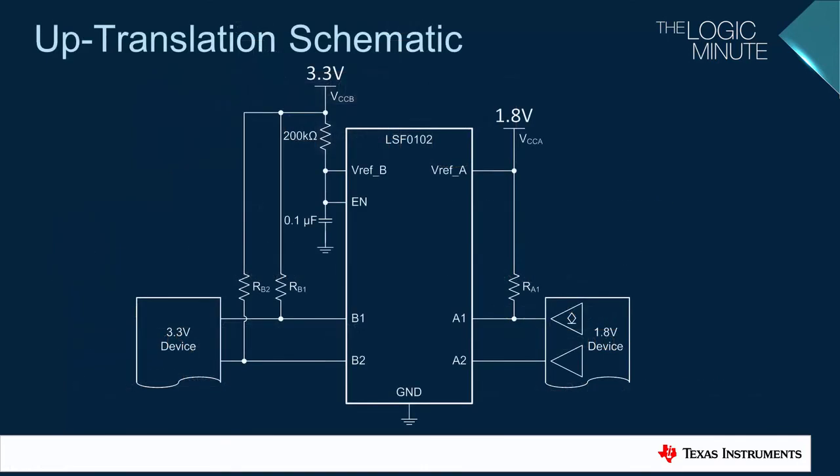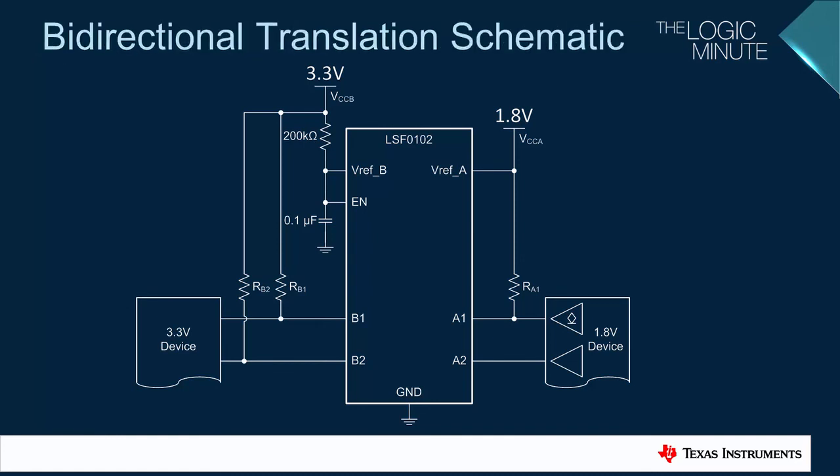This is a typical schematic for the LSF0102 uptranslating from a 1.8 volt device to a 3.3 volt device, including both a push-pull output and an open drain output. It's interesting to note that this is also the circuit that would be used for bidirectional translation. The pull-up resistors are always required on the high side, and pull-ups are only required on the low side if the low side device's output is open drain or its input has a leakage greater than 1 microamp.